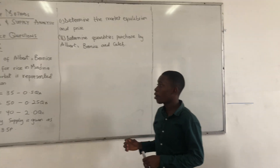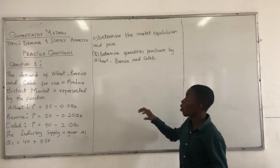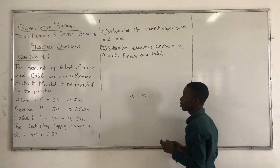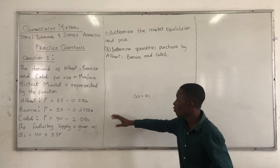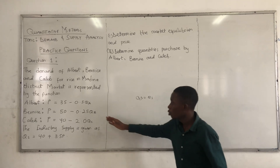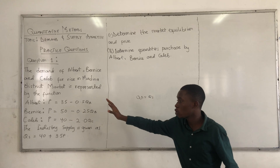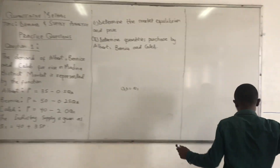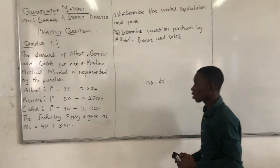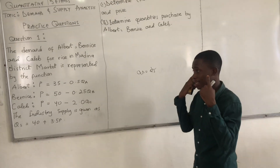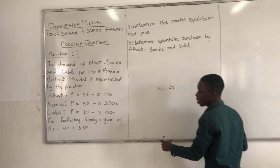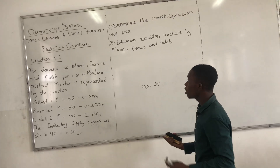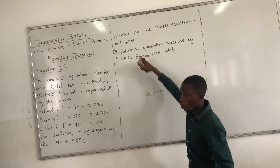The understanding is: when we are asked to find market equilibrium price and quantity, the first thing we do is equate QD equal to QS. Now looking at the question, we don't have a single QD — we have various quantities: QA, QB and QC. We already have quantity supply. We don't have quantity demand, so we are supposed to find quantity demand first, before we can equate it to QS to get the equilibrium price and quantity.